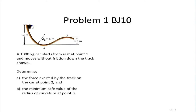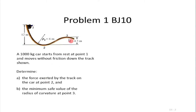Let me go over the problems and briefly the solutions. A particular geometry of a roller coaster track is given to us, and a 1000 kg car starts from rest and moves without friction on the track. We need to determine the force exerted by the track at point 2 and the minimum safe value of the radius of curvature at point 3.